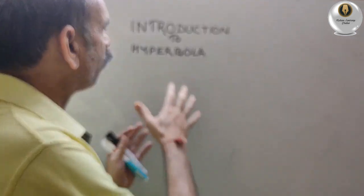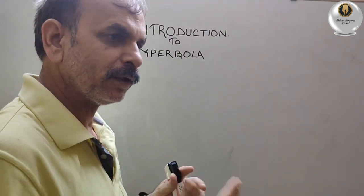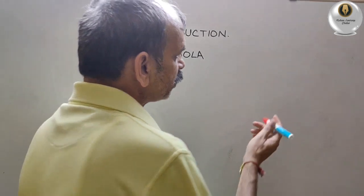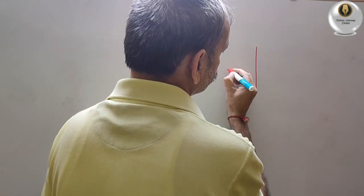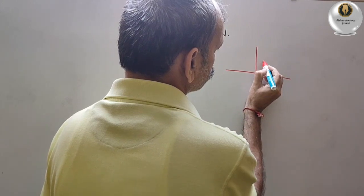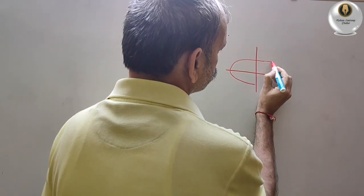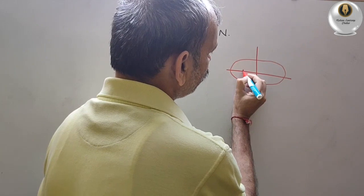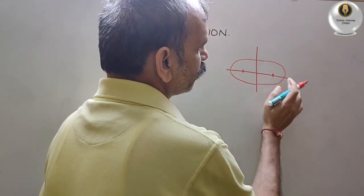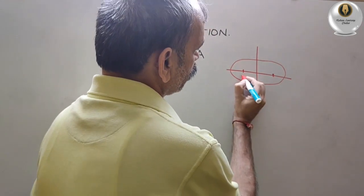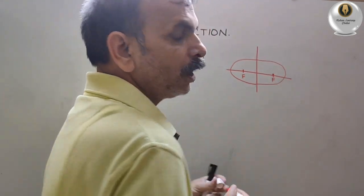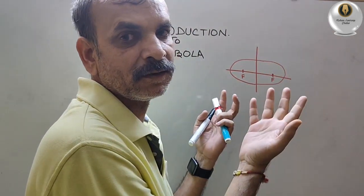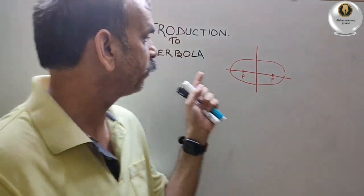Today we will understand what is hyperbola. Last class we have seen that there is an ellipse. So this is your ellipse, and this is your focal length — here and here are the focus. If you cut this ellipse and turn it, that is nothing but your hyperbola.